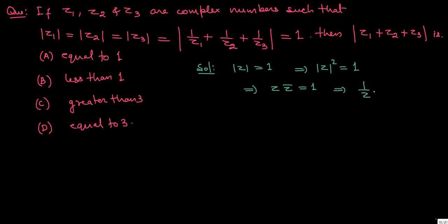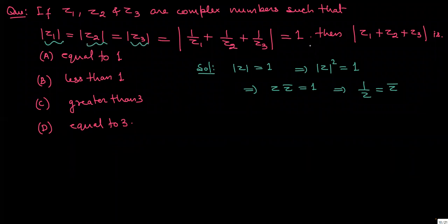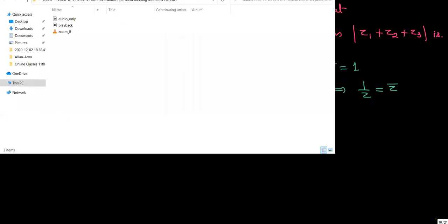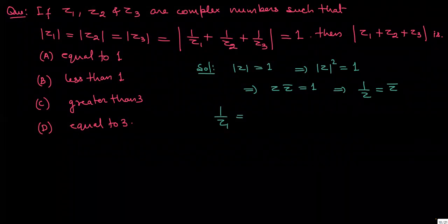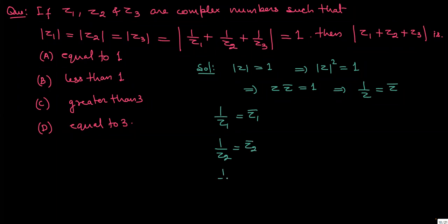So 1 upon z equals z-bar. Now if there are z1, z2, z3, each with mod equal to 1, then 1 upon z1 equals z1-bar, 1 upon z2 equals z2-bar, and 1 upon z3 equals z3-bar, each equal to 1.